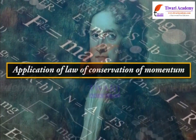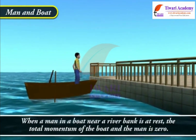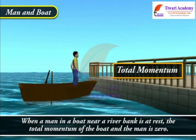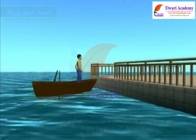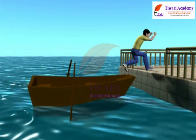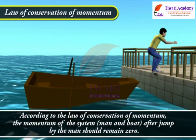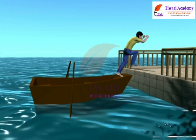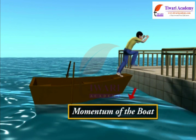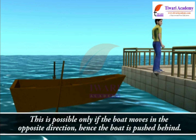Application of Law of Conservation of Momentum — Man and Boat: When a man in a boat near a river bank is at rest, the total momentum of the boat and the man is zero. When the man jumps from the boat, the boat slightly moves away from the shore. This is because when the man jumps, he gains velocity. According to the law of conservation of momentum, the momentum of the system after the jump should remain zero. To conserve momentum, the momentum of the boat should be equal and opposite to that of the man. This is possible only if the boat moves in the opposite direction. Hence, the boat is pushed behind.